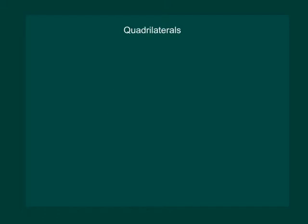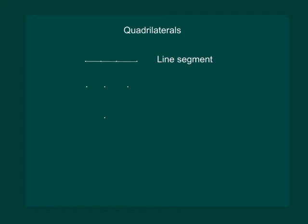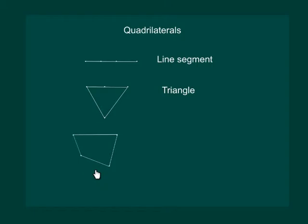Let us start with quadrilaterals. Let us mark 4 points. If all the points are collinear, we obtain a line segment on joining them in pairs in some order. Now consider 4 points such that 3 of the points are collinear — then if we join them in pairs, we get a triangle. Now let us consider 4 points such that no 3 points out of 4 are collinear, and join them in pairs. We obtain a closed figure with 4 sides. Such a figure formed by joining 4 points in an order is called a quadrilateral.